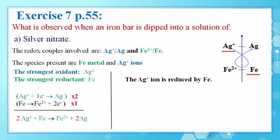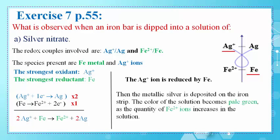Ag+ ions are reduced by Fe, and the metallic silver formed is deposited on the iron strip. The color of the solution becomes pale green since the quantity of Fe2+ ions increases in the solution.